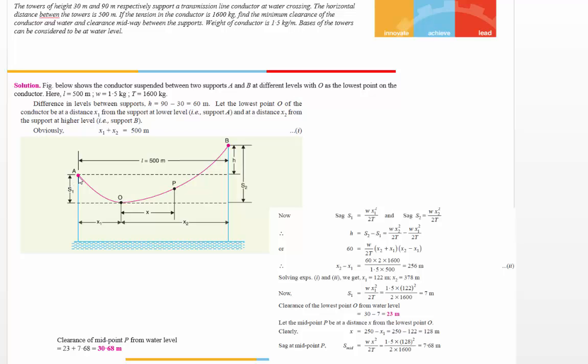One important point is that we have to calculate from point A to the point of sag, and from point B to point O, the sag. Then we can calculate the total. We know that the sag calculation is s1 = w*x1²/2T, and sag 2 is s2 = w*x2²/2T.